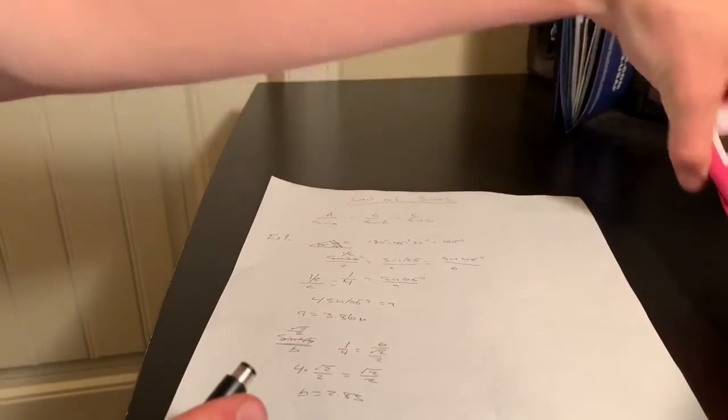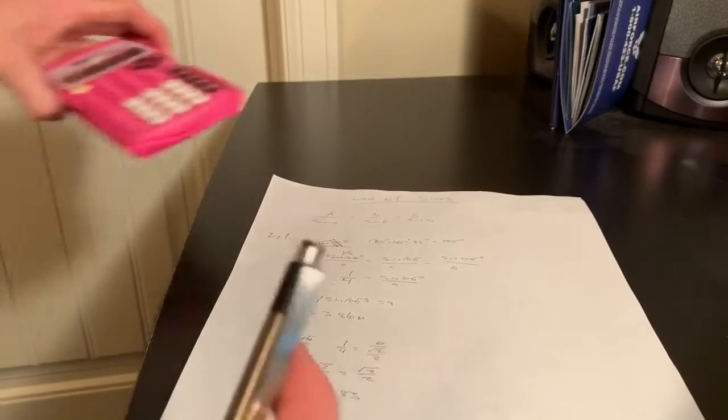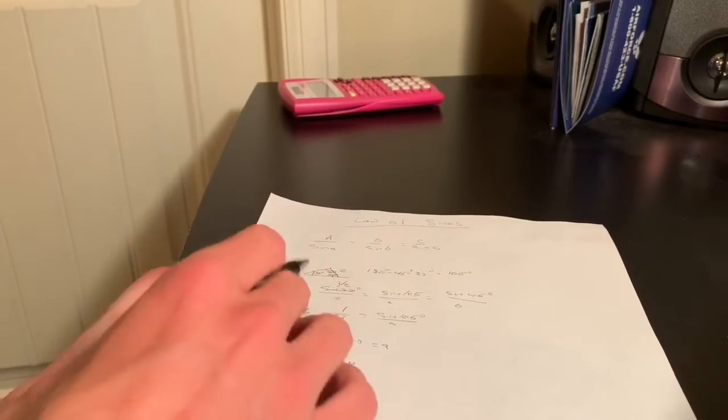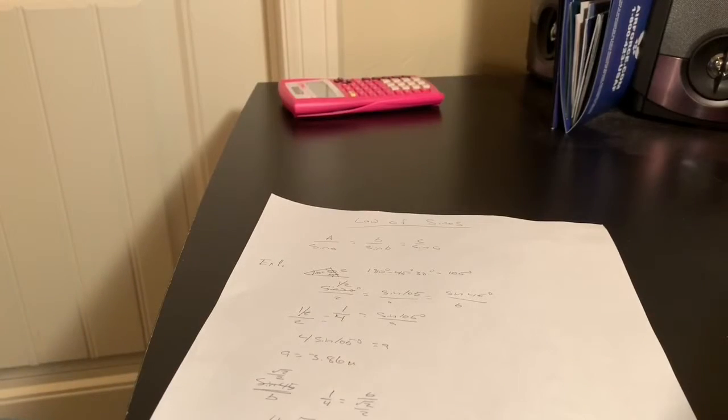So that's how you find your unknown side lengths to a triangle using the law of sines. So the next example.